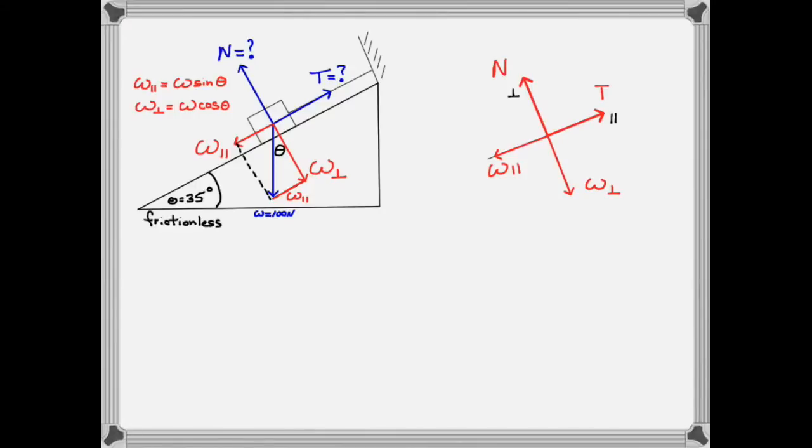Since the box is at rest and in equilibrium we can state that all of the forces acting upon it must be balanced. In other words the net force is equal to zero. And the only way that that can be true is if the net force in both the parallel and perpendicular directions are also equal to zero. Now for the all important force equations.